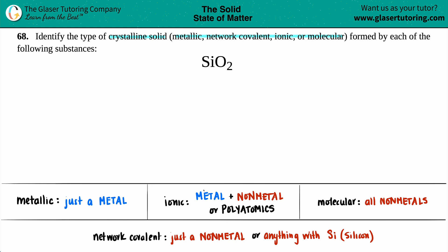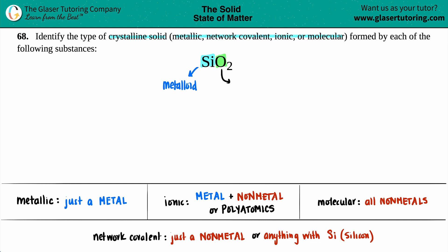Ionic compounds require a metal and a non-metal. We do have silicon (Si), and on the periodic table silicon is a metalloid. Oxygen is a non-metal. So maybe silicon is acting as a metal, since metalloids can have both metal and non-metal properties. We'll hold that thought.